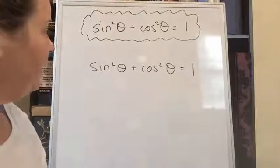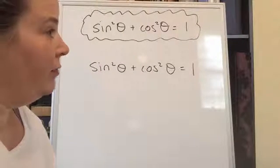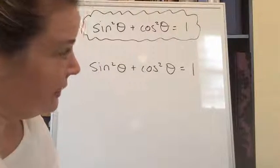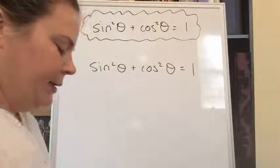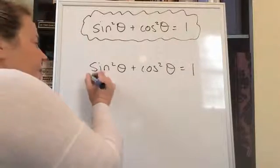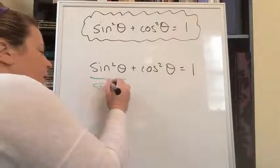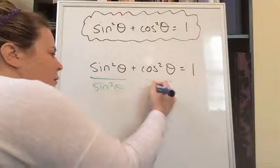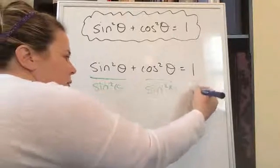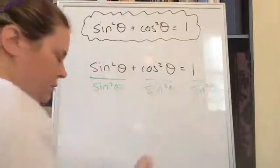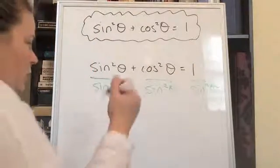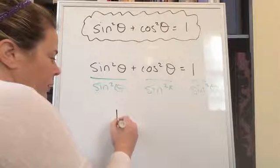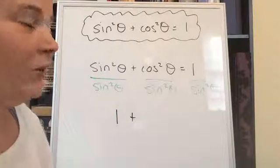So then there are a couple other identities that are variations of this identity, and we know sine squared plus cosine squared equals one. But what if I took this identity and I divided everything by sine squared? What does this simplify to? We have sine squared over sine squared is one, plus, what's cosine over sine?